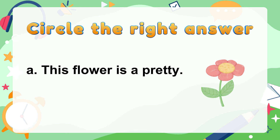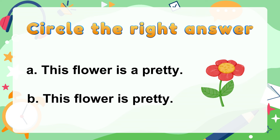A: 'This flower is a pretty.' B: 'This flower is pretty.' The answer is B — 'This flower is pretty.' It's not A because you do not use the article A without a noun.